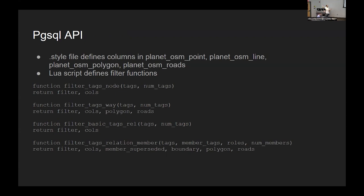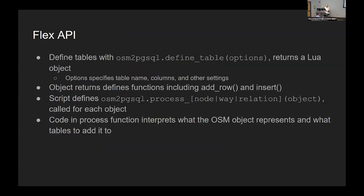We came up with a new API which, for each object, a function gets called, and you can then within that function call back to OSM2PGSQL to tell it to put an object in a table. There's good documentation on this, so I'm not going to go into detail, but your code interprets what the OSM object represents and where it should go.